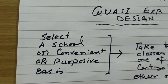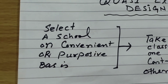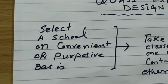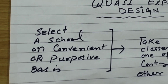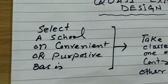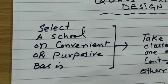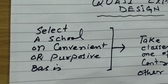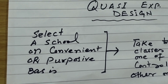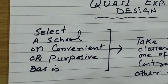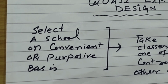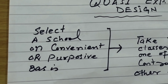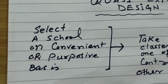First of all, you will select a school on a convenient or purposive basis. The purpose is that if there is a criteria that you need to fulfill, you will select a school accordingly. Or if there is a nearby school and you have a request from the headmaster, then you can select it.